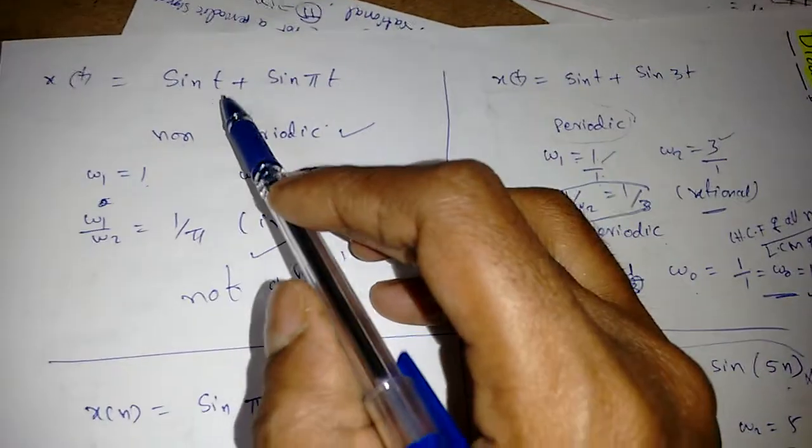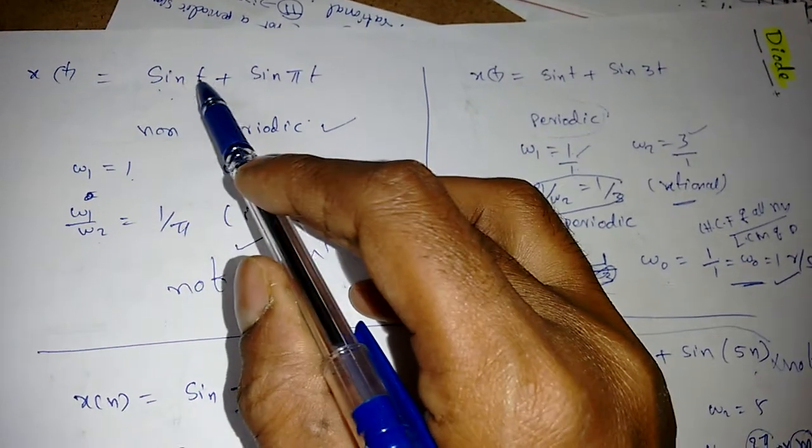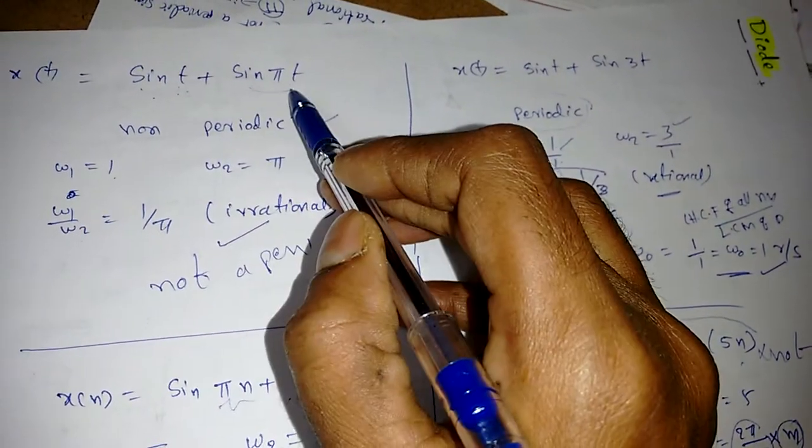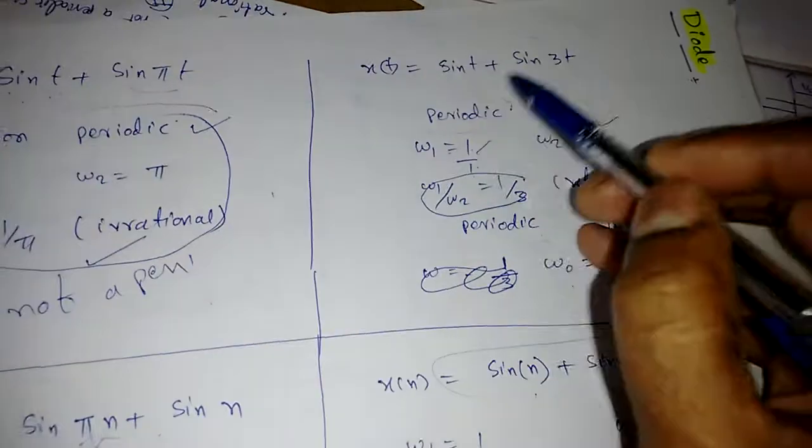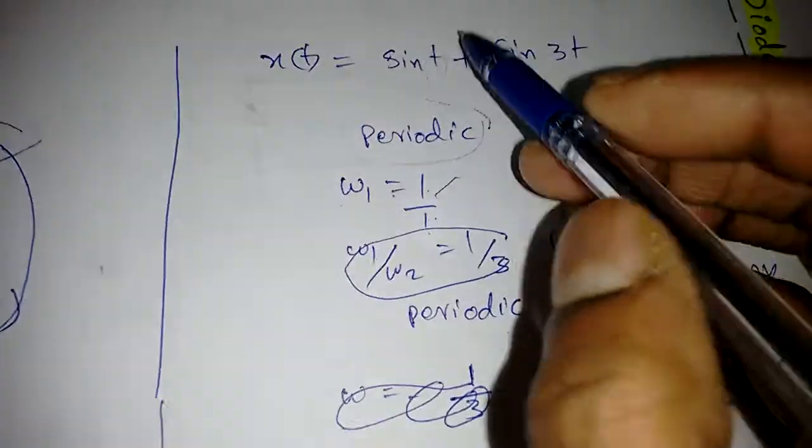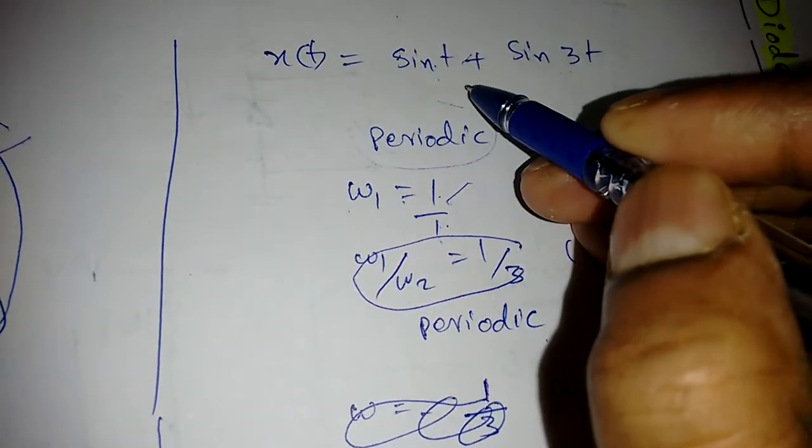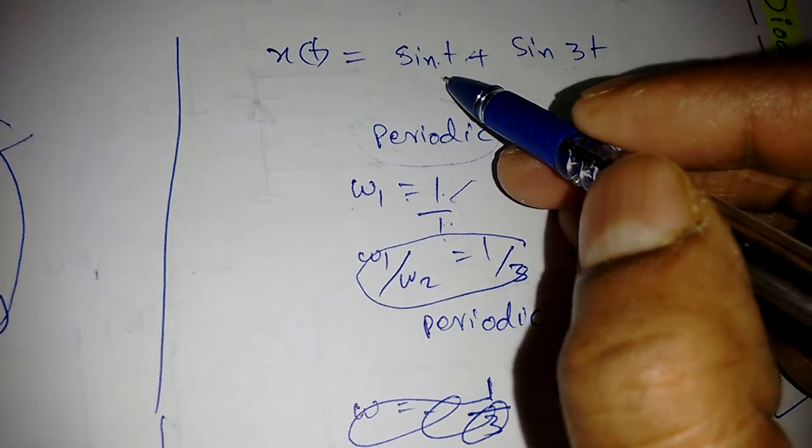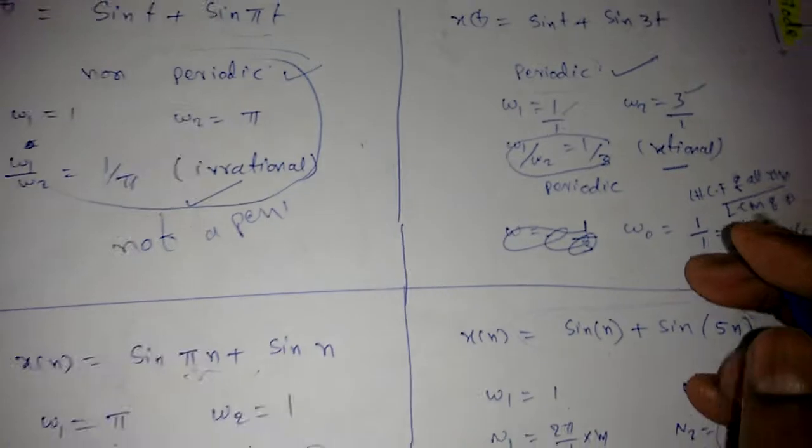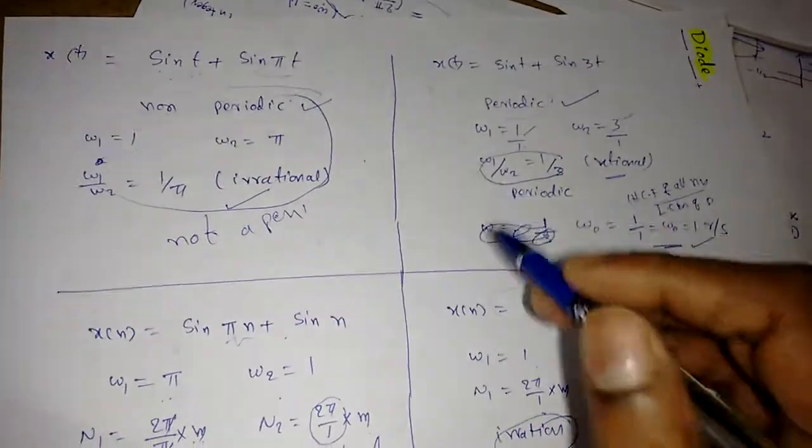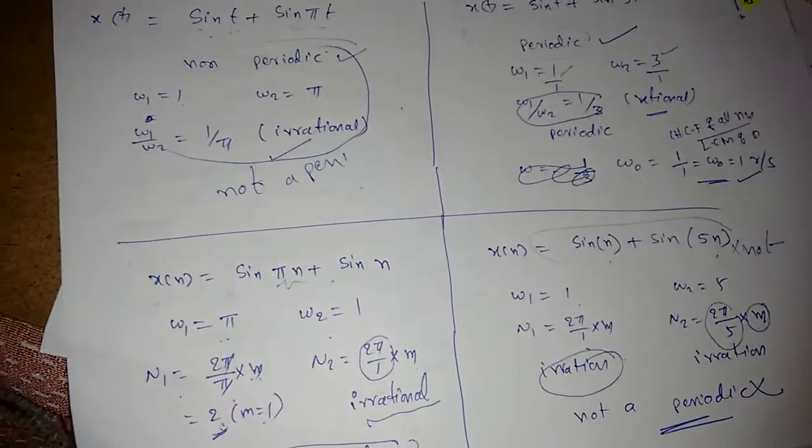Similarly if we see for continuous time, one signal has no pi and another signal has pi, we can say the total signal is not periodic. For a continuous signal, if pi is there in all signals, pi should be there. If there is no pi, all signals should not contain any pi. Then we can say it is a periodic signal. Remember these points for how to find a period for given signals.